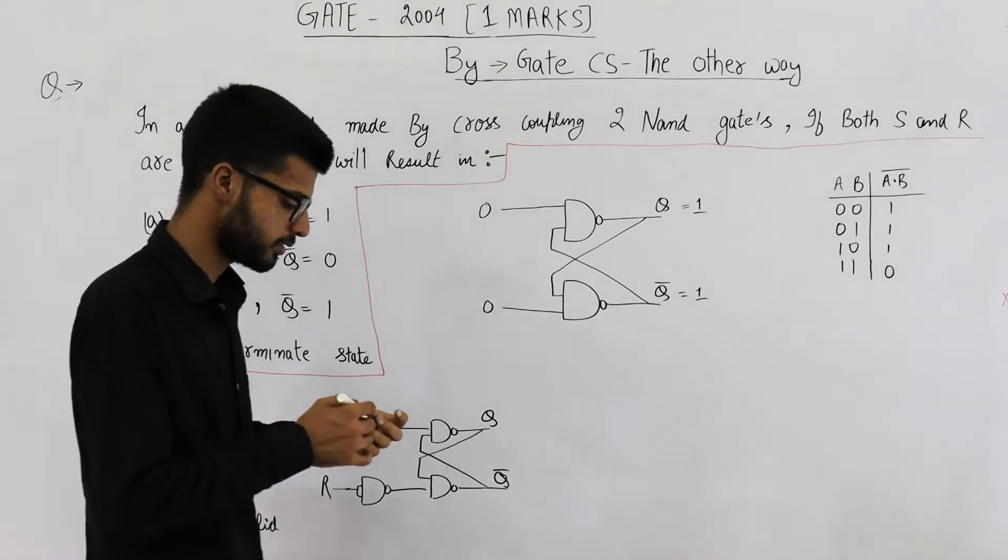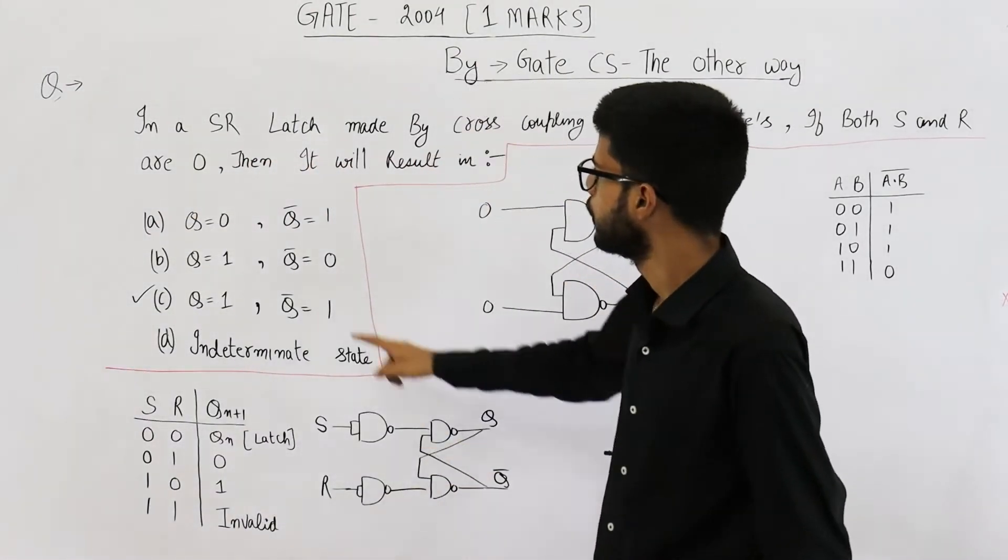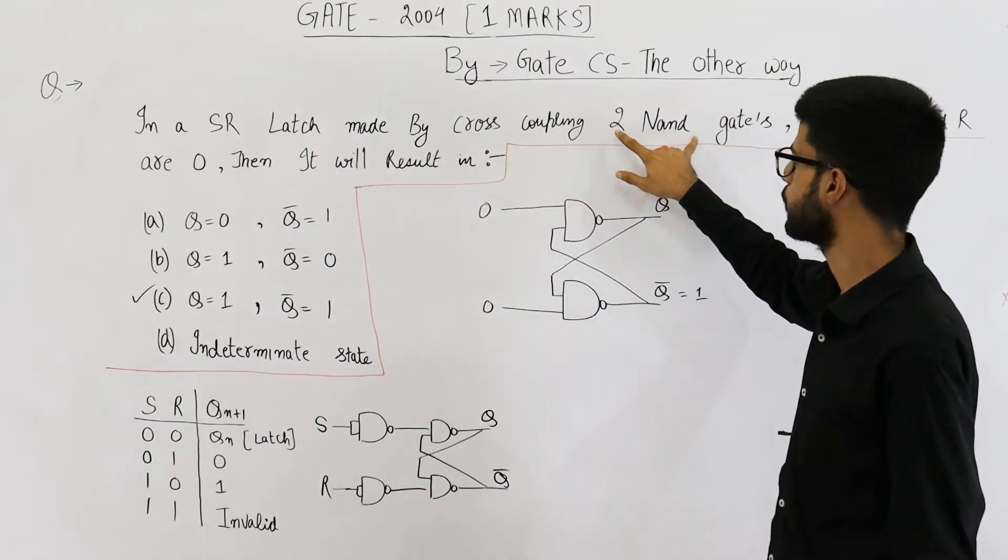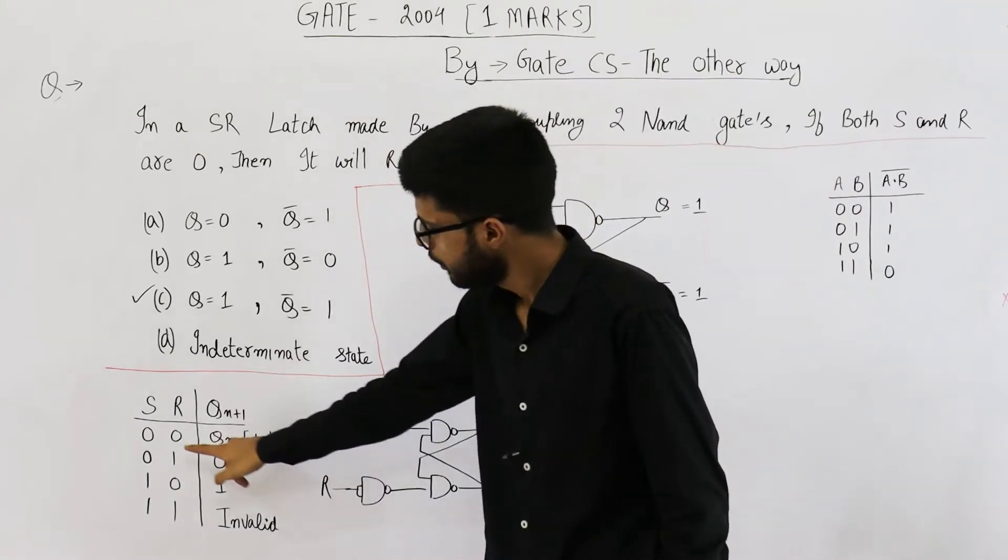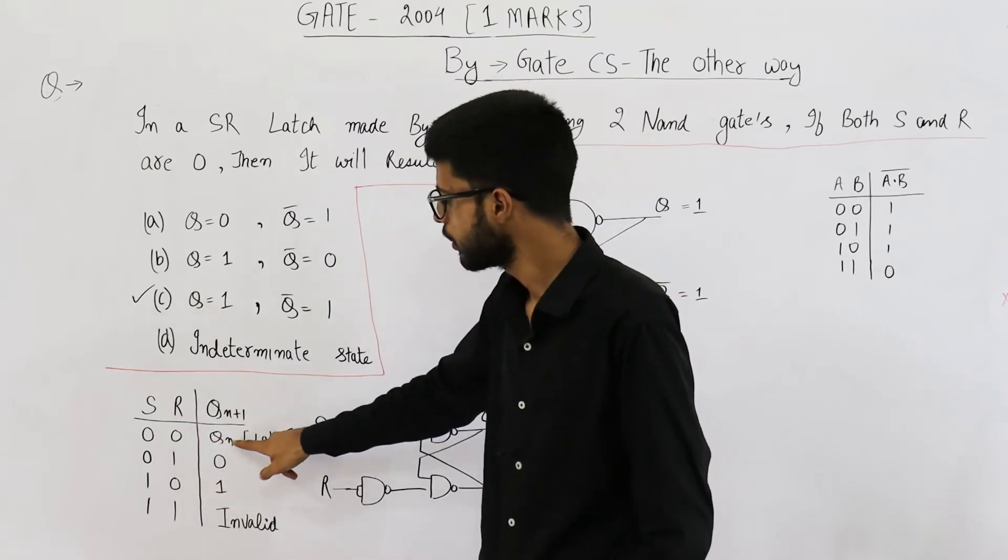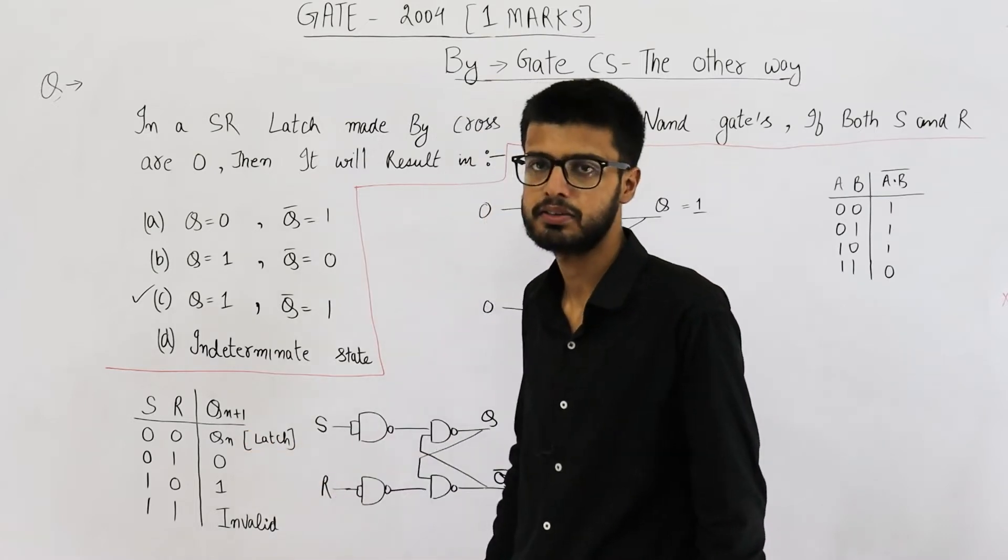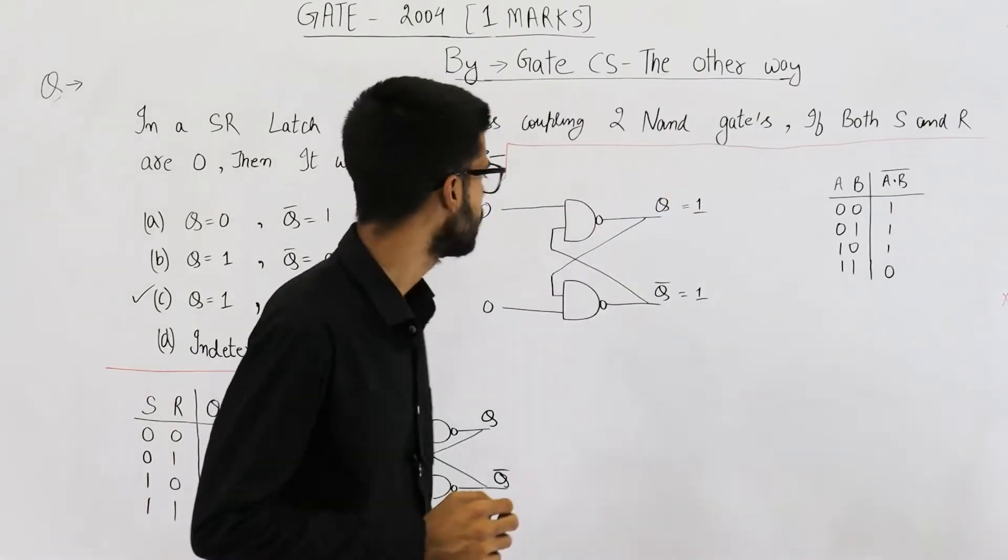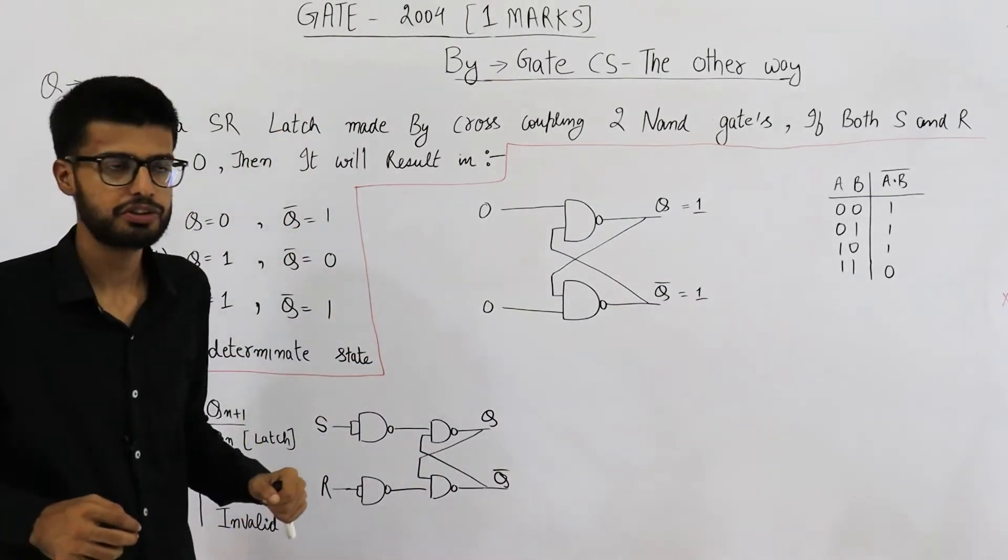Now, students generally remember the standard SR latch. They ignore this fact that it is made by using two NAND gates only. They remember the truth table of standard SR latch. 0, 0 in standard SR latch results to Q_n. That means the next state will be same as current state. Then they say current state is not given in the question. So we cannot answer this question. Because current state is not mentioned.